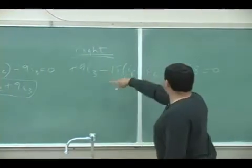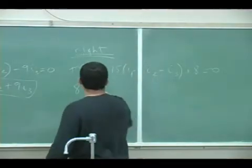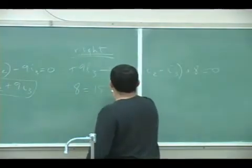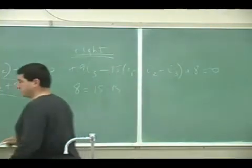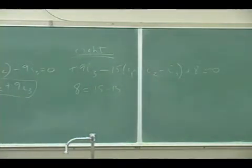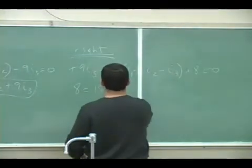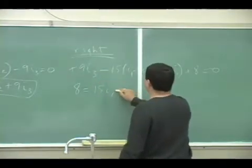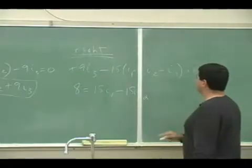And then again, this goes to the other side. So 8 is equal to 15i1, and then negative 15i2. Let's see here.